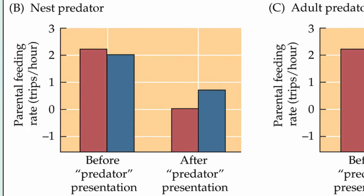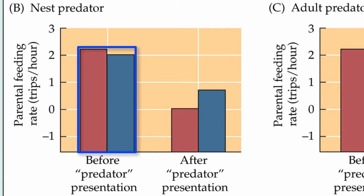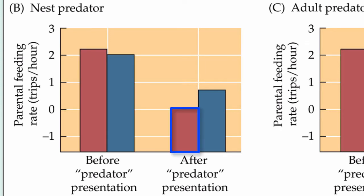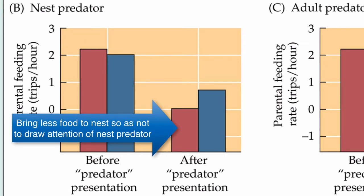Let's look at an experimental study that tested this in these two locations. If you look at the parental feeding rate in both the temperate and the tropics before a predator presentation experiment, you see comparable parental feeding rates. However, after a nest predator was presented, North American birds substantially reduced their feeding, and South American birds also reduced their feeding, but not to the same degree. The interpretation is that temperate zone birds substantially reduce parental feeding so they don't draw the potential nest predator to their nest location, slowing down the feeding rate until the predator leaves the area.